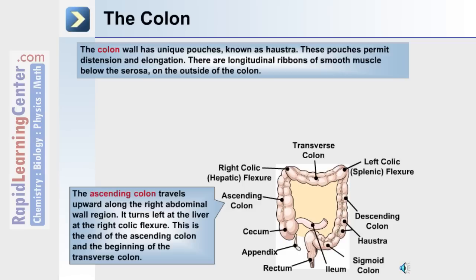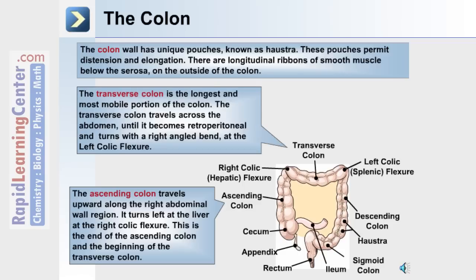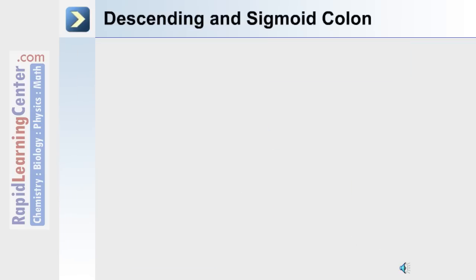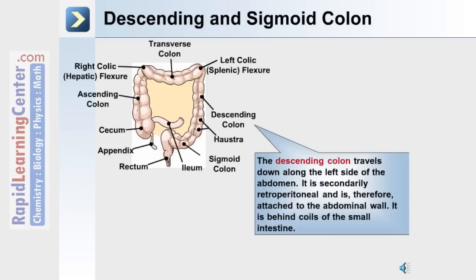The transverse colon is the longest and most mobile portion of the colon. It travels across the abdomen until it becomes retroperitoneal and turns with a right-angled bend at the left colic or splenic flexure. The next portion is the descending colon, which travels down the left side of the abdomen. It is secondarily retroperitoneal, attached to the abdominal wall, and lies behind coils of the small intestine.